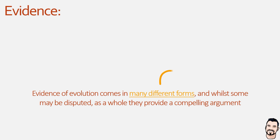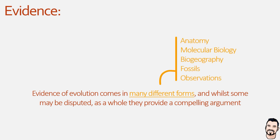Some of the key observations we have used to document evolution and identify the mechanism is through the use of five key evidence types: anatomical features of different species, molecular biology and genetic information, biogeography and the distribution of species, fossil records, and direct observations of living species. We'll go through each of these in turn to see how they have helped shape our understanding of evolution.